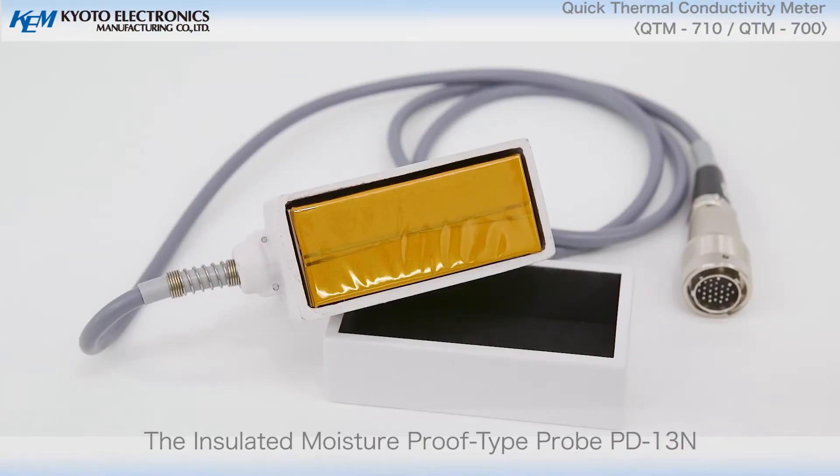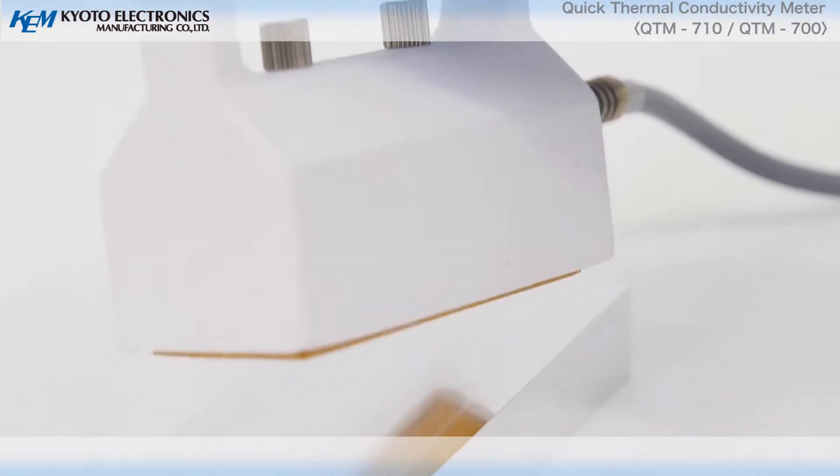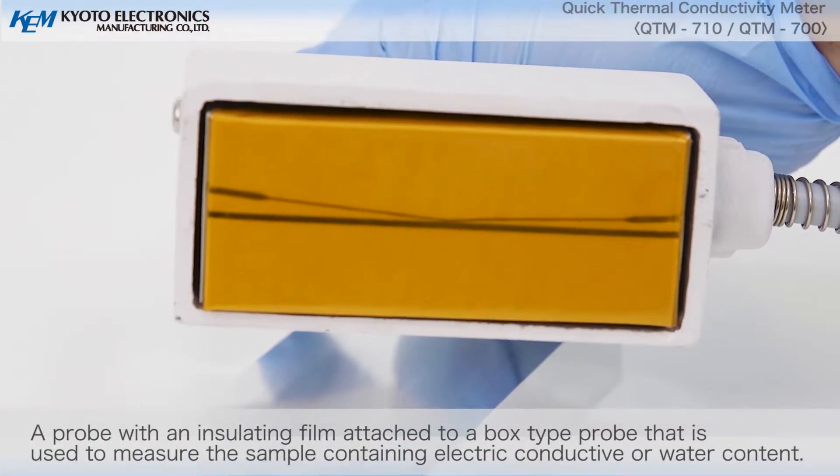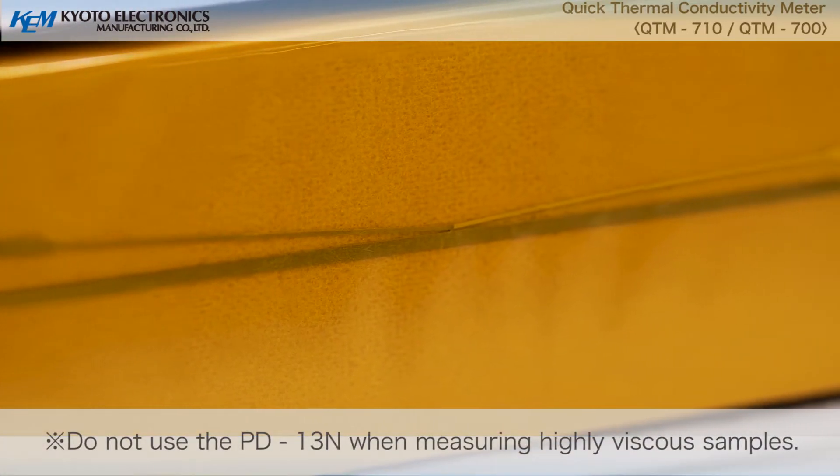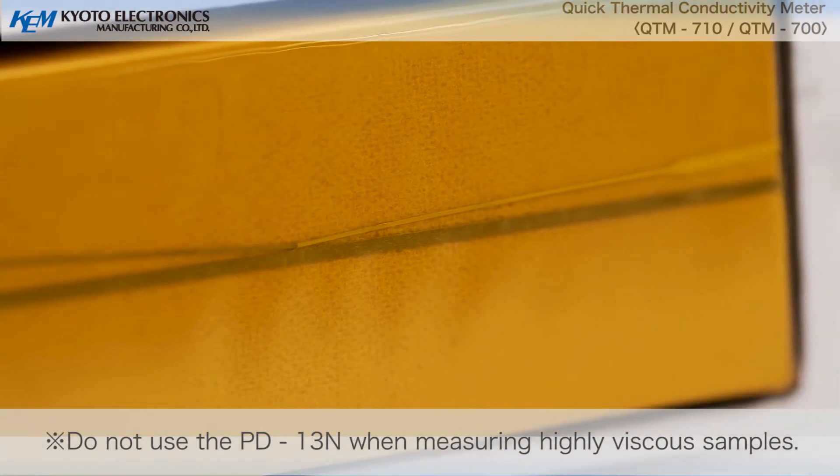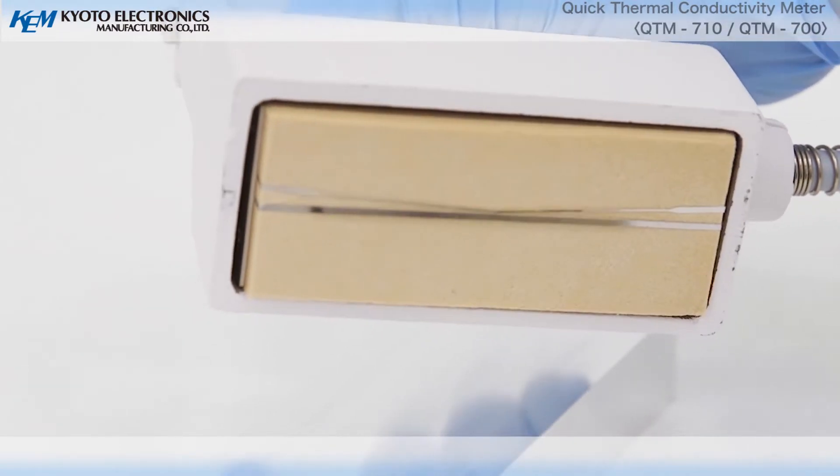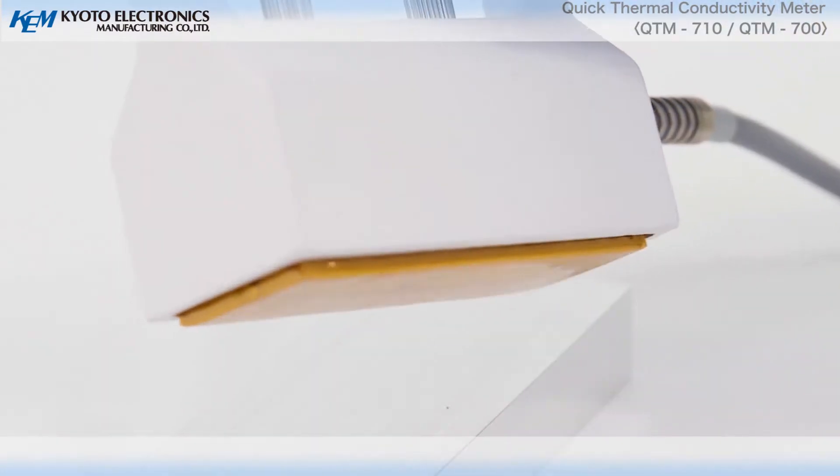The insulated moisture proof type probe PD-13N. A probe with an insulating film attached to a box type probe that is used to measure the sample containing electric conductive or water content. PD-11N, PD-13N.